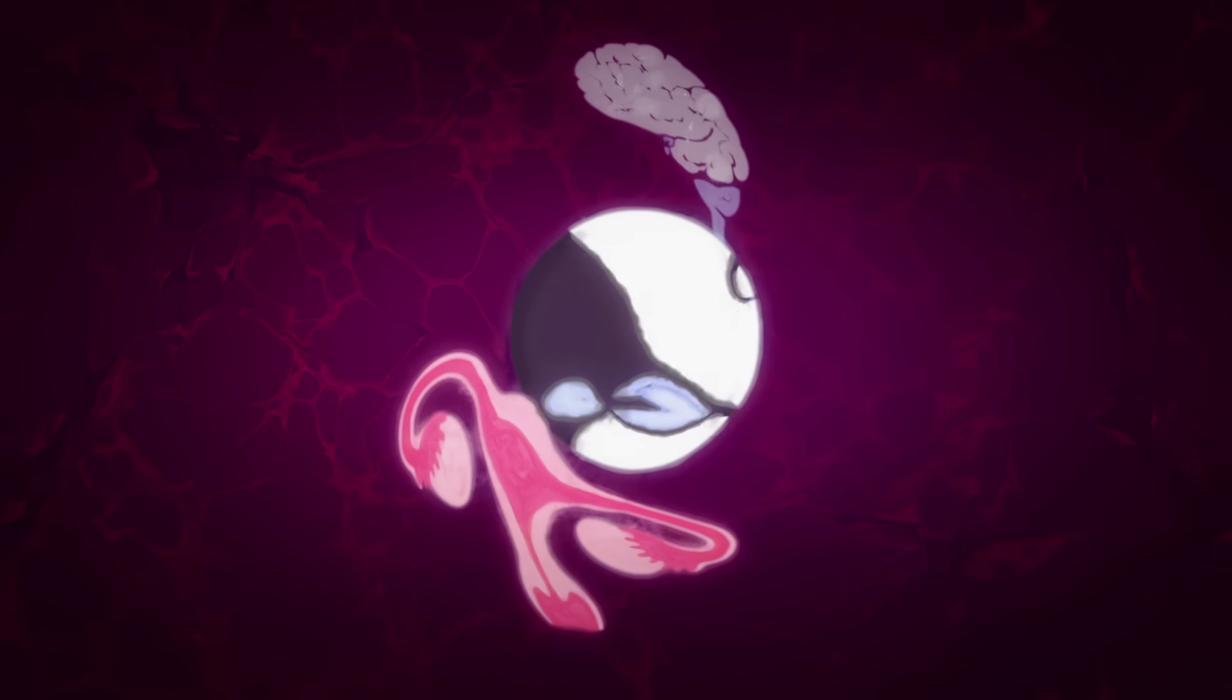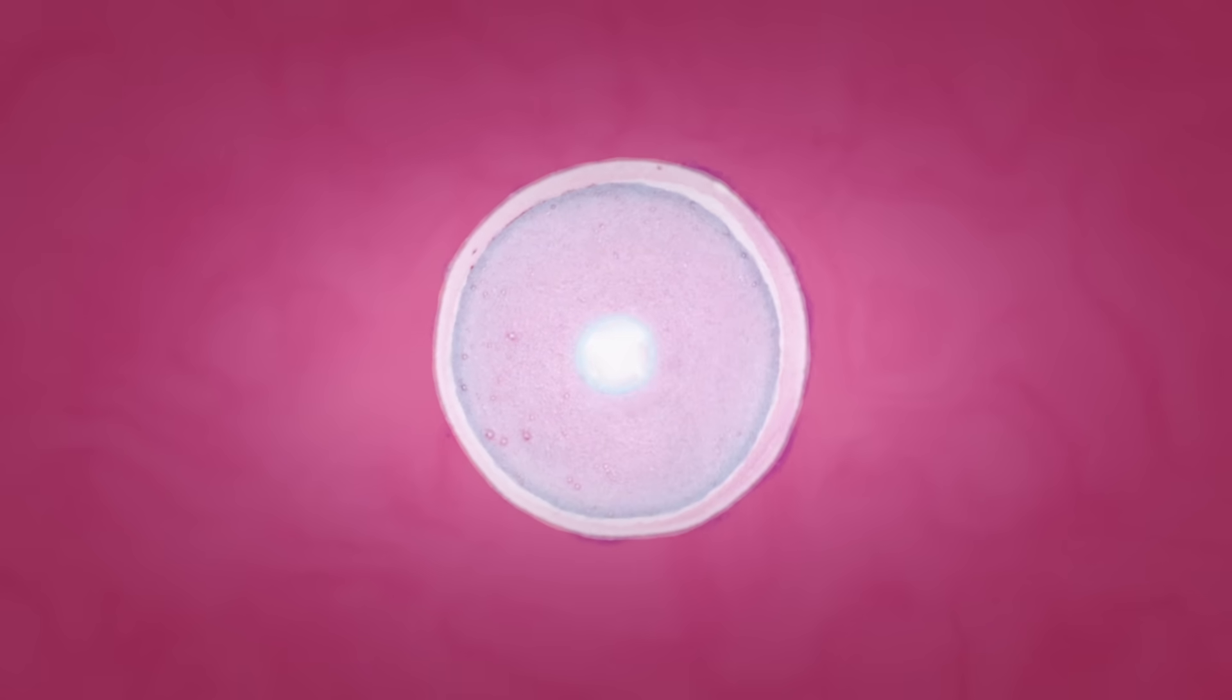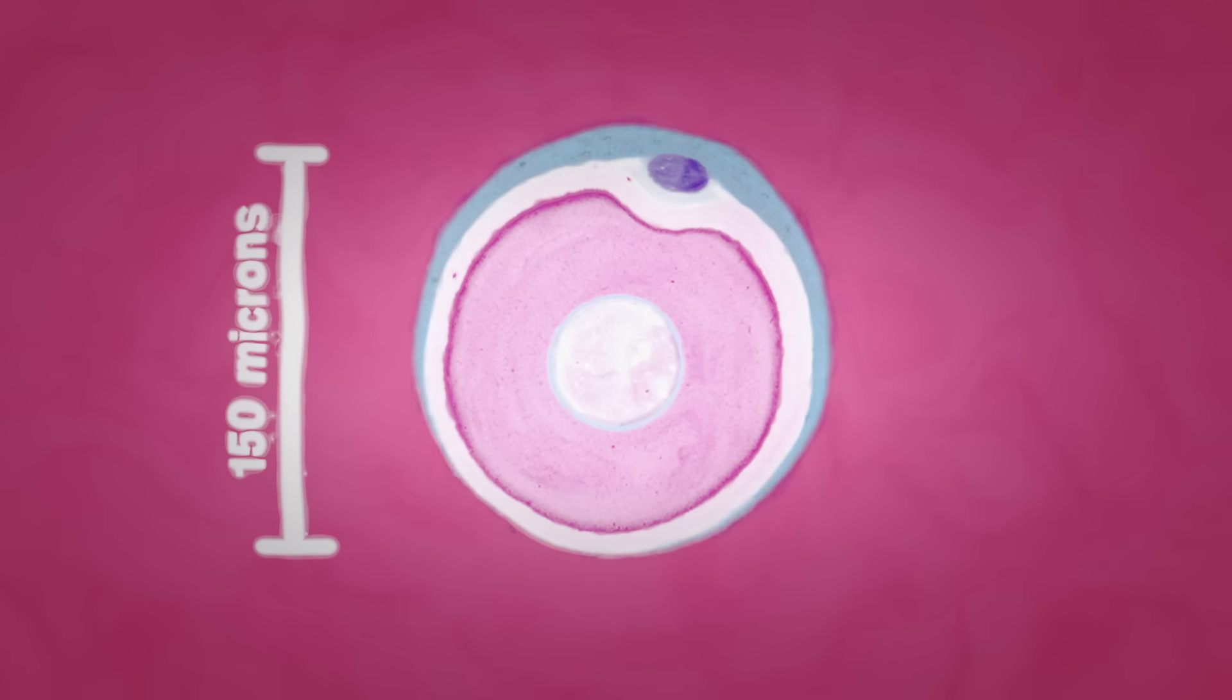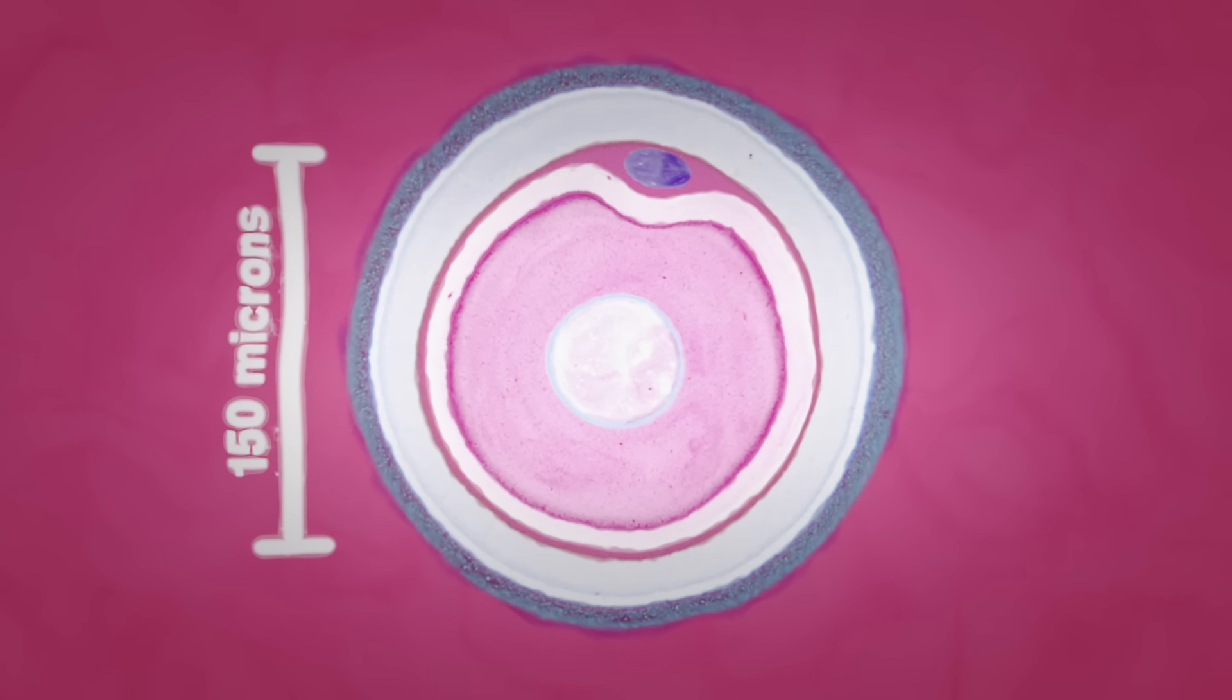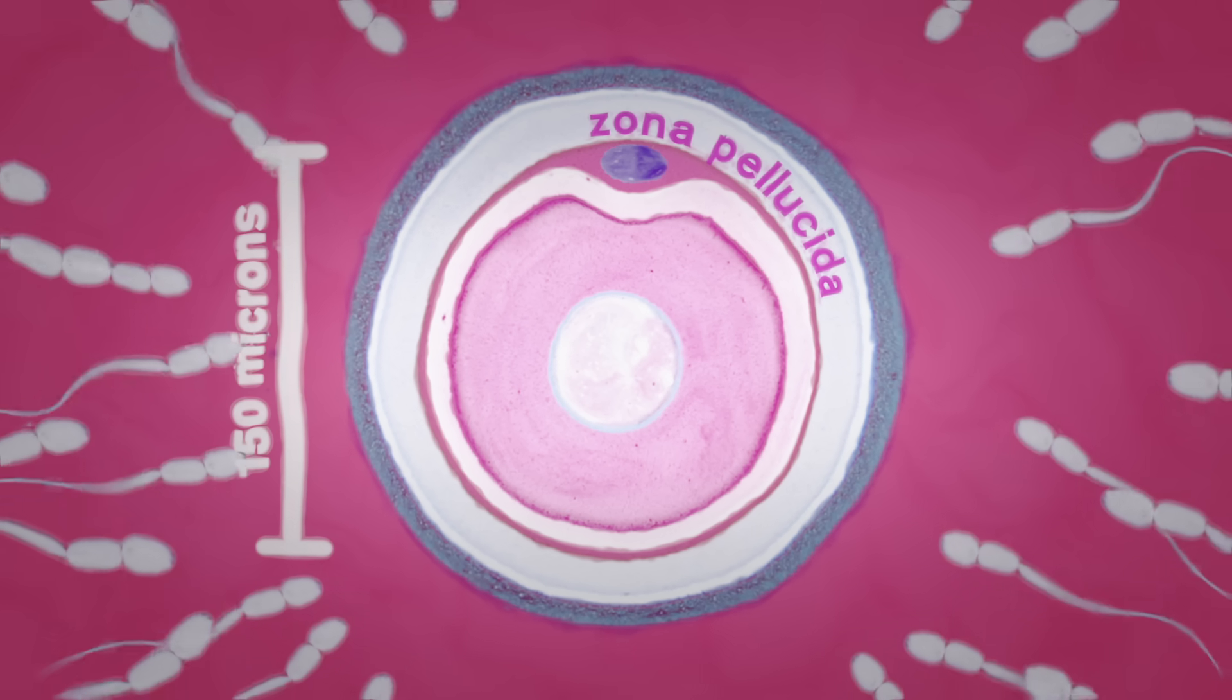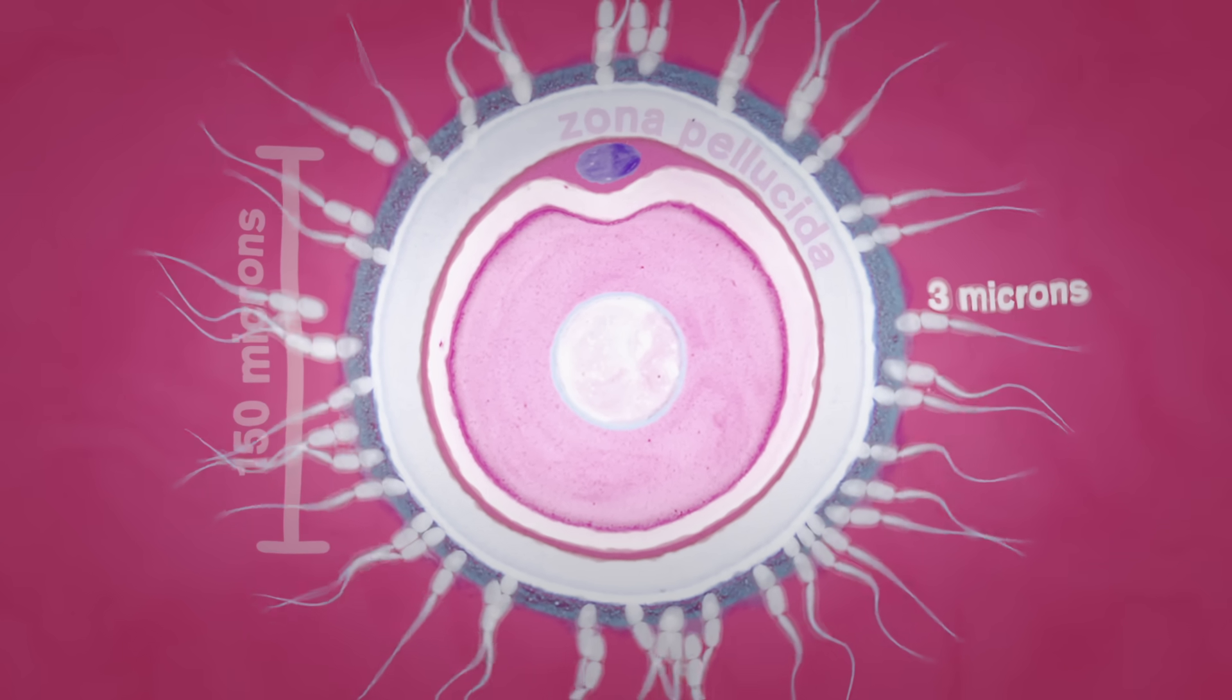preparing to create a new egg and uterine lining the following month. The egg is the largest cell in the body, and is protected by a thick extracellular shell of sugar and protein called the zona pellucida. The zona thwarts the entry and fusion of more than one sperm, the smallest cell in the body.